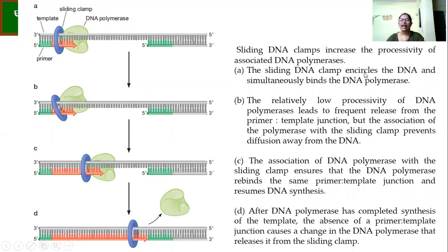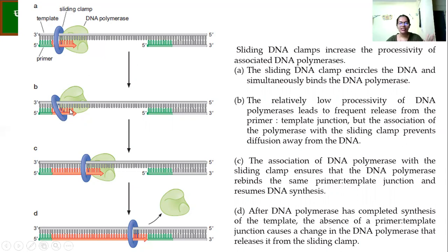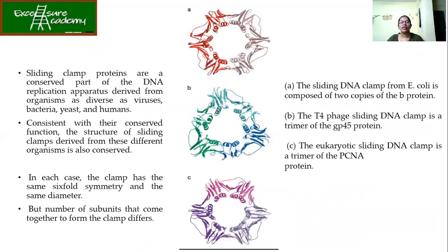Sliding DNA clamps increase the processivity of the associated DNA polymerase. The sliding DNA clamp encircles the DNA and simultaneously binds the DNA polymerase. If the sliding clamp were not there, there's a chance the DNA polymerase might get released from the primer-template junction. Since it is associated with the sliding clamp, it remains there and will rebind to the same primer-template junction and continue DNA synthesis. Once replication is complete, the DNA polymerase is released but the sliding clamp remains and then recruits other proteins like PCNA for histone modification.